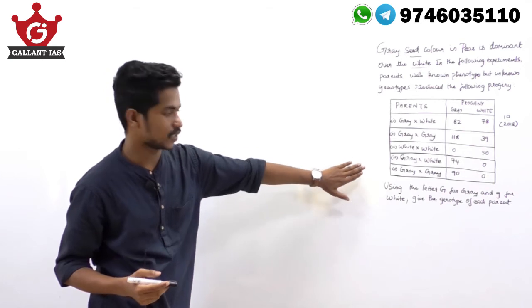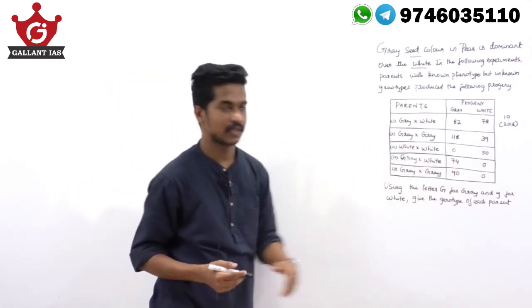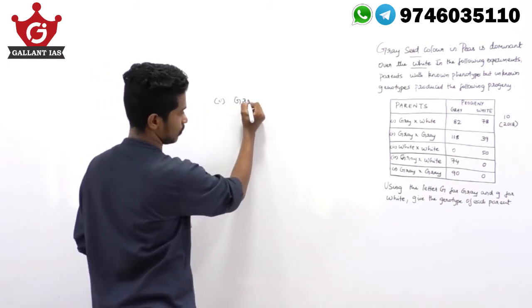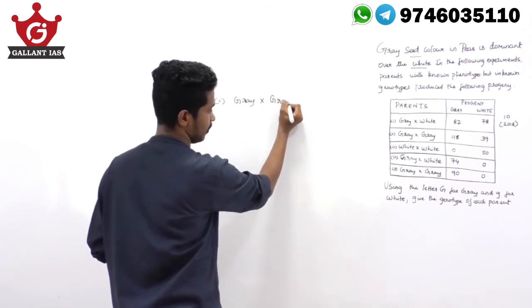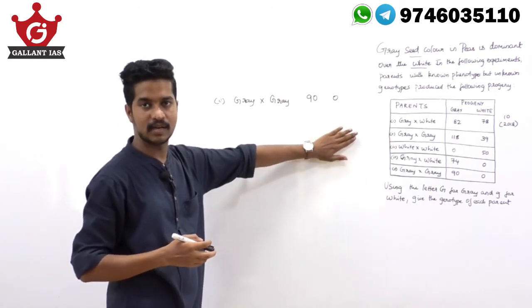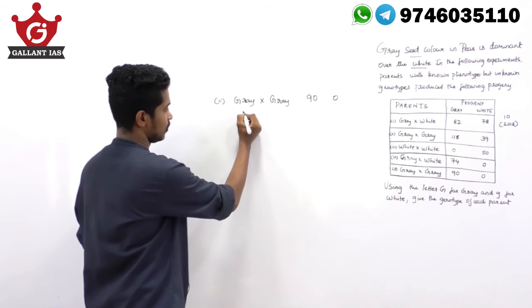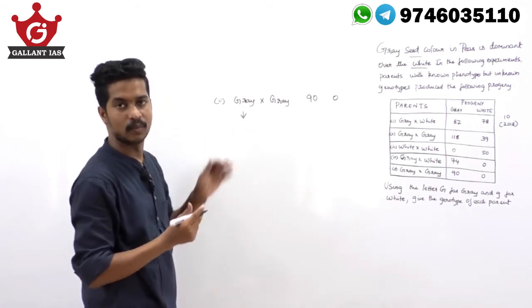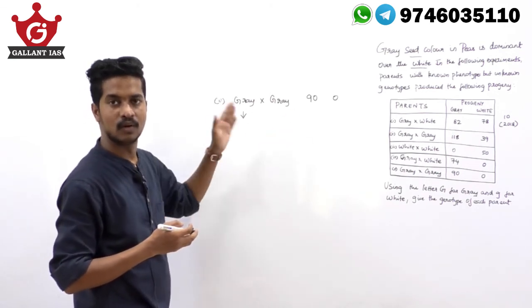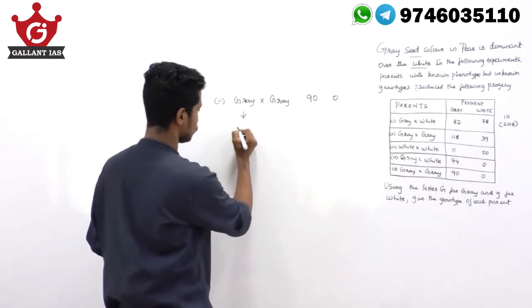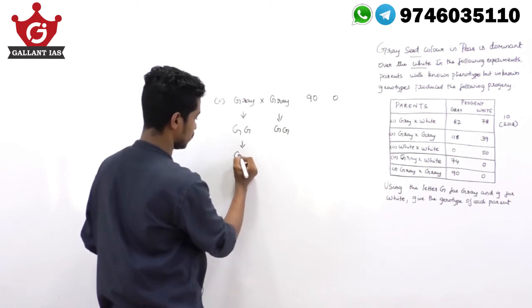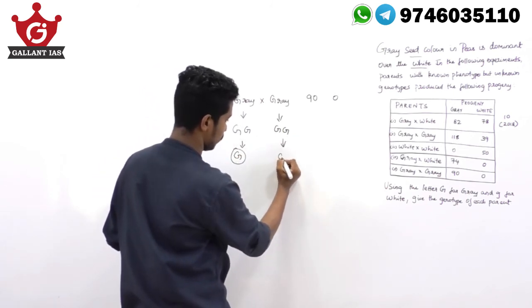The fifth cross: gray is crossed with gray, and 90 gray and 0 white are produced. Since no white progenies are obtained, both parents must be in homozygous dominant condition. So both parents are capital G capital G × capital G capital G, producing all capital G capital G offspring — all gray. The genotype of the fifth parent pair is capital G capital G and capital G capital G.